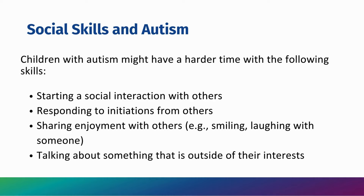Social skills and autism. Children with autism may have a harder time with the following skills: starting a social interaction with others, responding to initiations from others, sharing enjoyment with others such as smiling or laughing with someone, and talking about something that's outside of their interests.